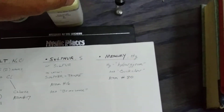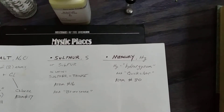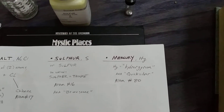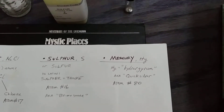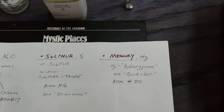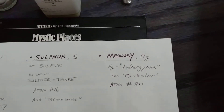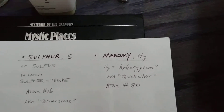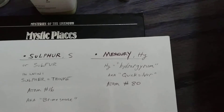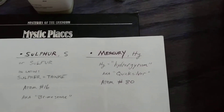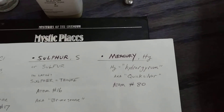Mercury, on the other hand, is atom number 80, so it's a large atomic structure. Again, a single atom substance. It's been called quicksilver in the past, and the Latin is hydrargirum. Hg is the symbol for mercury on the periodic table of atoms, but nobody ever calls it that — it's called quicksilver or mercury.